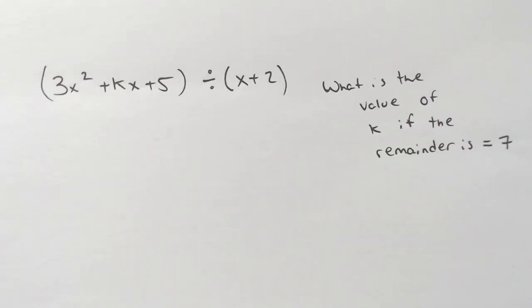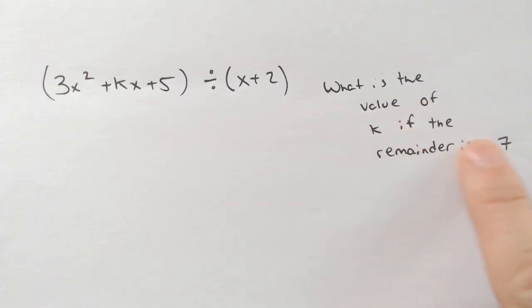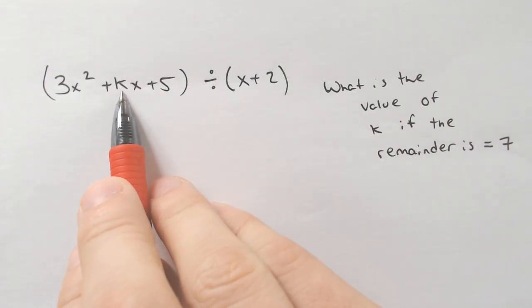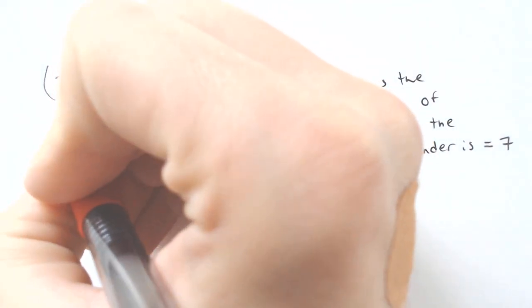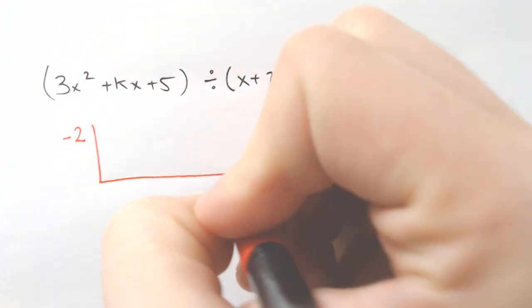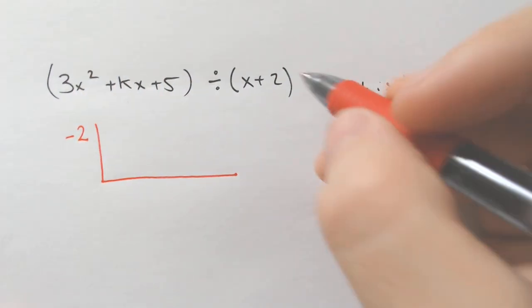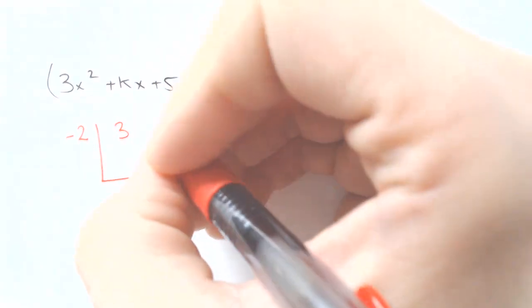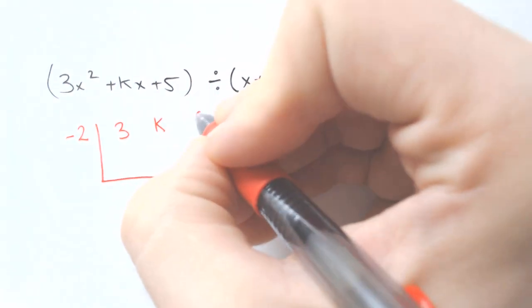So here we're dividing, and I'm saying what is the value of K if the remainder is equal to 7, and the K is in the middle, so it's going to be set up the same way, but now it's going to just be a little more difficult. Negative 2 changed to negative 2, we got a 3, we got a K, and then we got a 5.